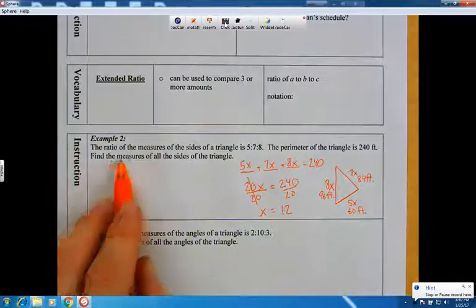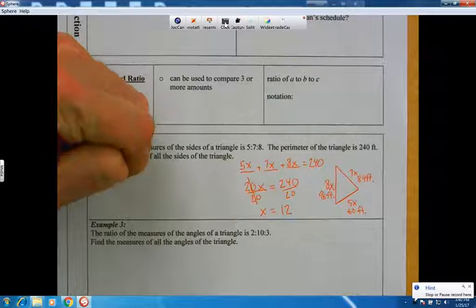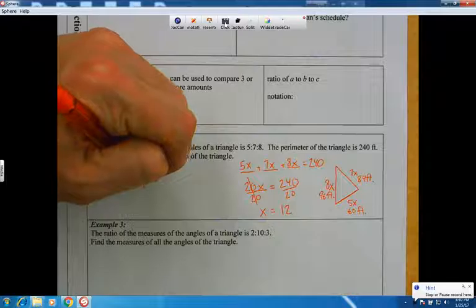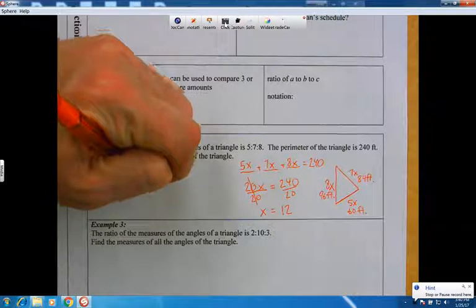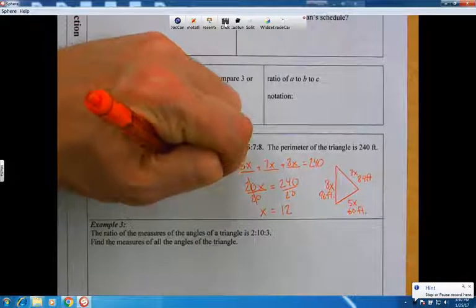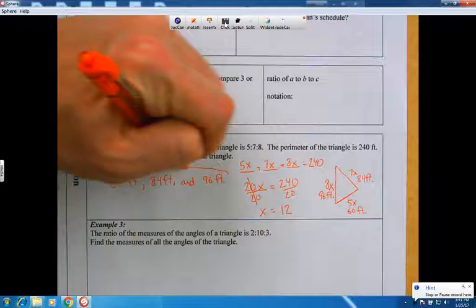So the question was for us to find the measures of all the sides of the triangle. And we just did that. It's 60 feet, 84 feet, and 96 feet. That's how long each side is.